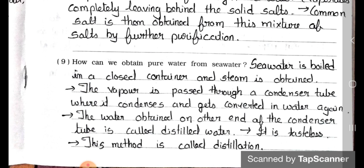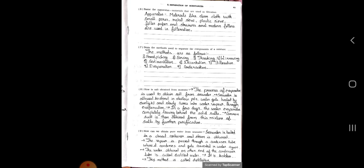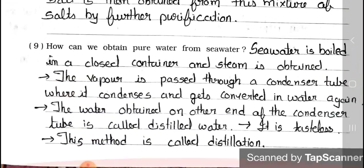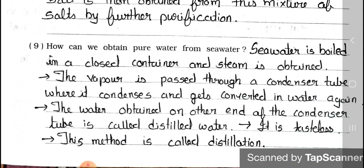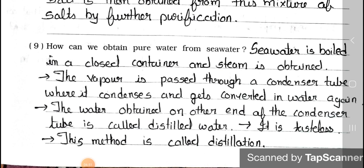Question 9: How can we obtain pure water from seawater? Answer: Seawater is boiled in a closed container and steam is obtained. The vapour is passed through a condenser tube where it condenses and gets converted into water again. The water obtained on the other end of the condenser tube is called distilled water. It is tasteless. This method is called distillation.